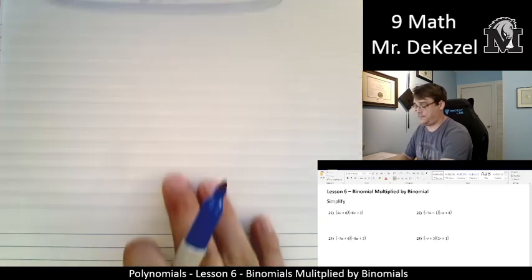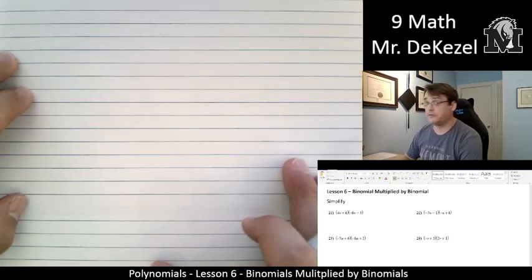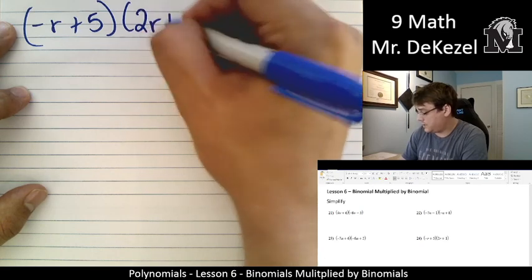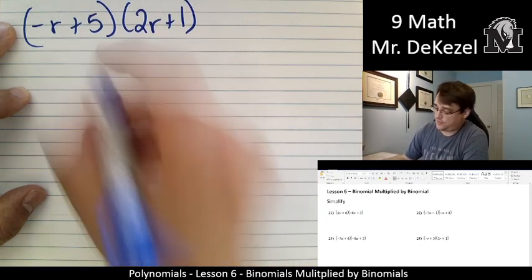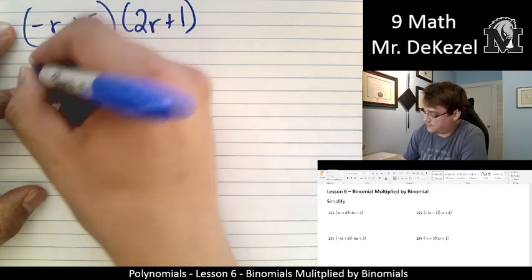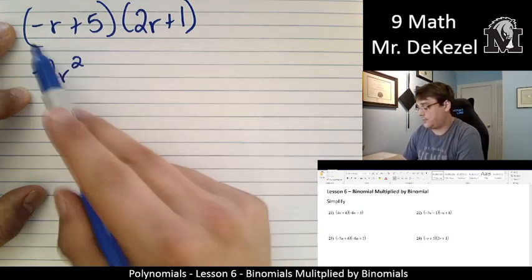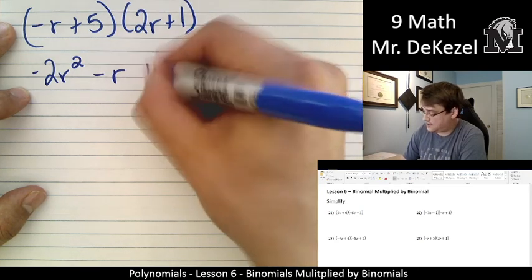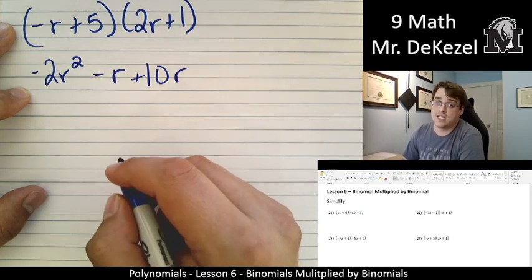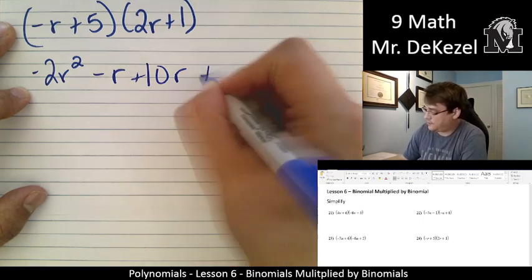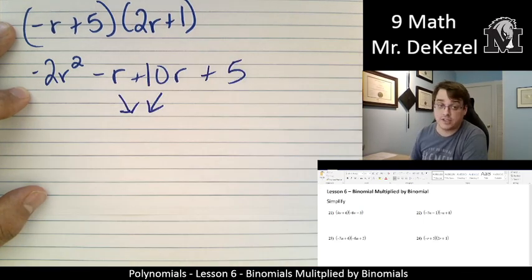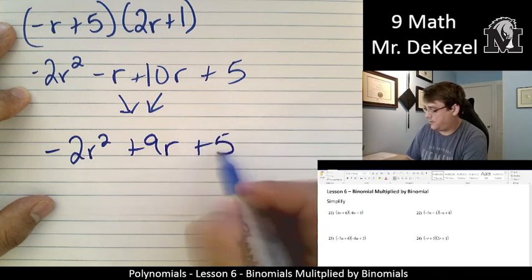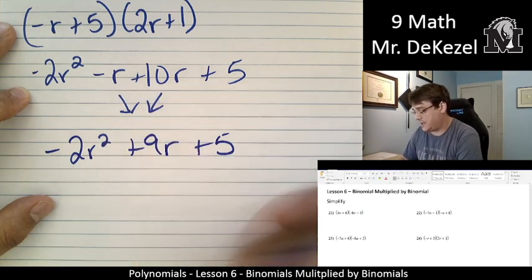Let's do another one. We've got two more after that. You can pause and give it a go if you're feeling confident. (-R + 5)(2R + 1). First terms. -R times 2R. That's -2R². -R times 1. That's just -R. 5 times 2R. That's 10R. 5 times 2 is 10. We bring the R along. And 5 times 1 is 5. We are going to combine our like terms. -2R² + 9R + 5. -1 + 10. That's +9.